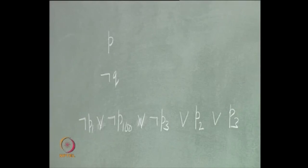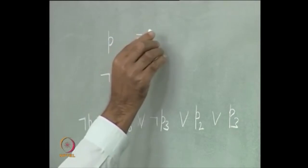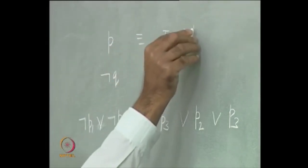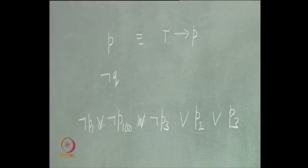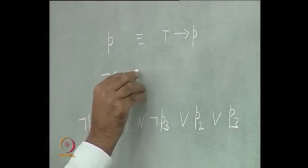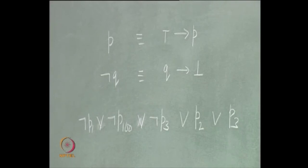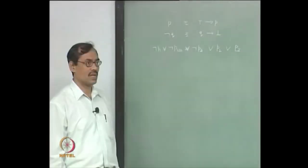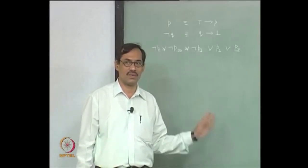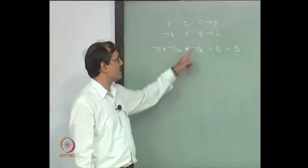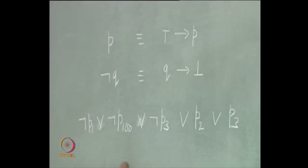A Horn formula will be a conjunction of Horn clauses. Each Horn clause is a disjunctive clause where at most one literal is unnegated and all others should be negative. Usually we do not represent Horn formulas in this form, because there is a more suggestive way of writing them. For example, P can be written as top implies P. And not Q may be written as Q implies bottom. We are using top and bottom symbols here.